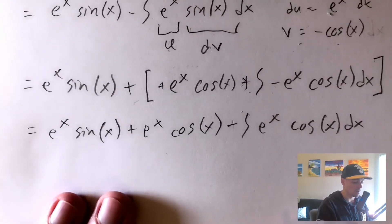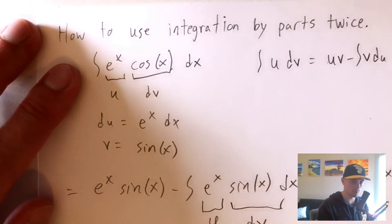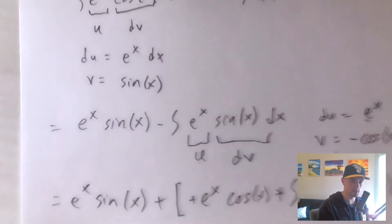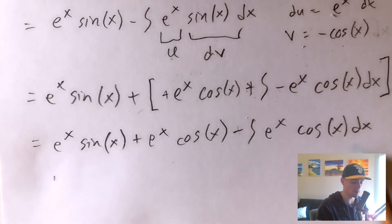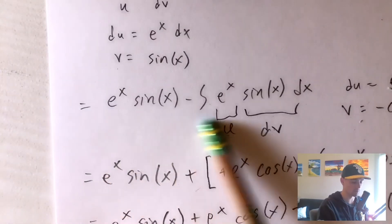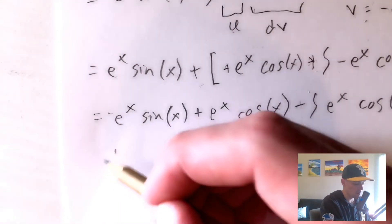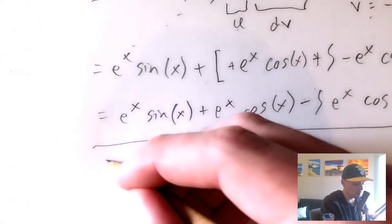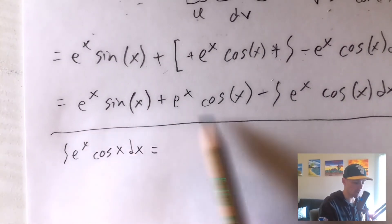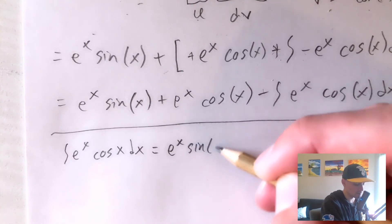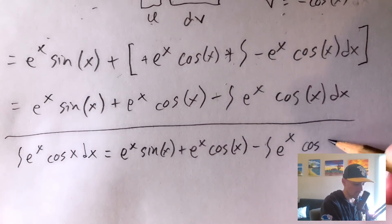It seems like we haven't gotten anywhere because now we have the integral of e to the x cosine x dx again — exactly what we started with. But here's the key insight: we know that this whole expression is equal to the original integral. We've used integration by parts twice to arrive at: the integral of e to the x cosine x dx equals e to the x sine x plus e to the x cosine x minus the integral of e to the x cosine x dx.